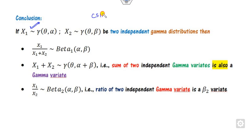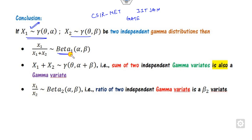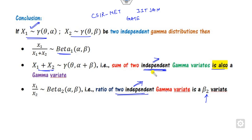So the conclusion is: if you have two independent gamma distributions, the sum of two gamma variates is again gamma, and the ratio follows the beta distribution of the first kind. For the one-parameter gamma case, the sum is gamma and the ratio follows the beta distribution of the second kind. This is very useful for CSIR NET, IIT JAM, and GATE examinations.